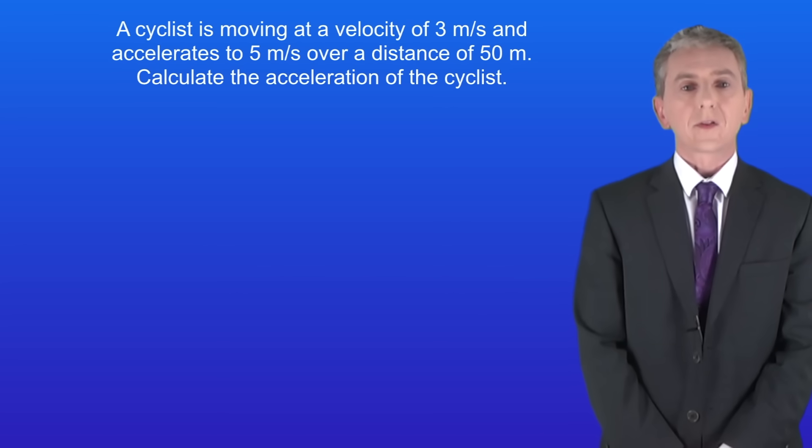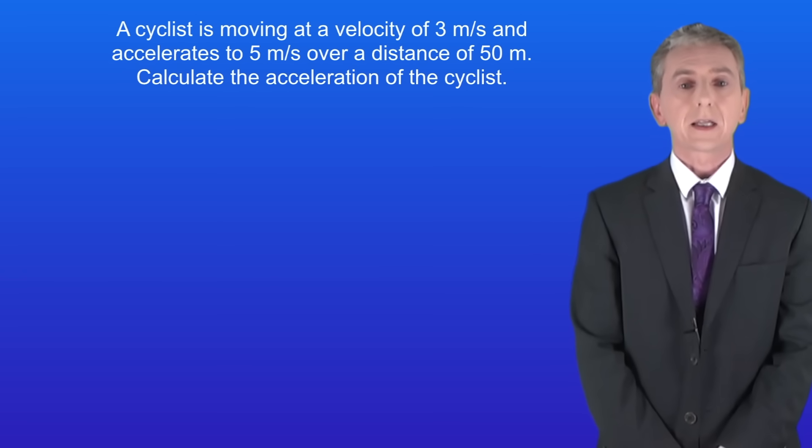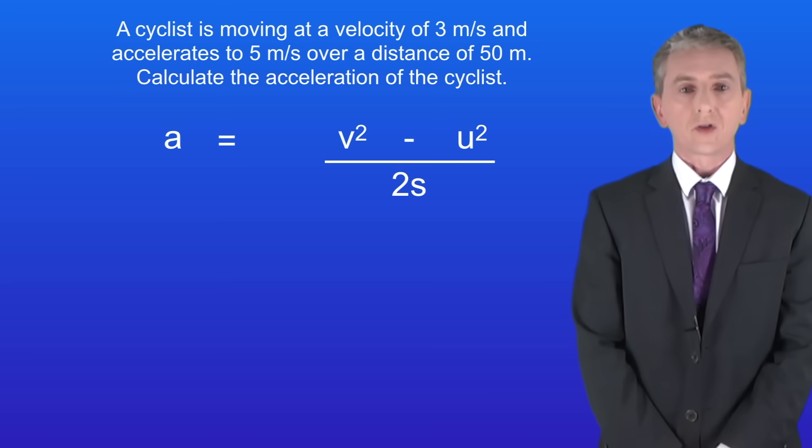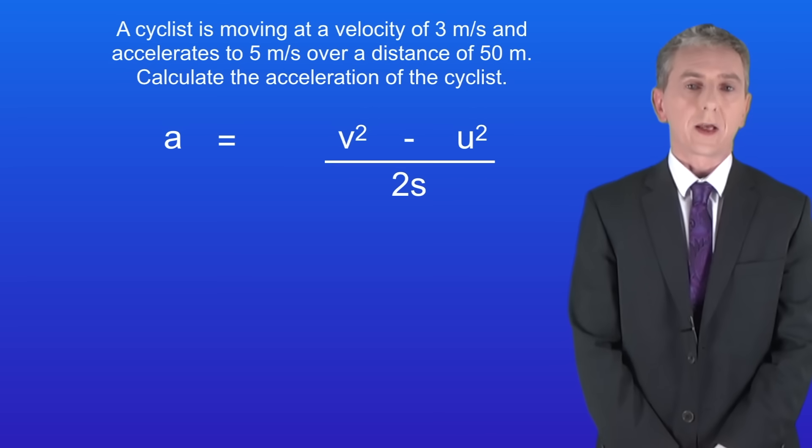Here's a question for you to try. A cyclist is moving at a velocity of 3 metres per second and accelerates to 5 metres per second over a distance of 50 metres. Calculate the acceleration of the cyclist. Now for this question I've rearranged the equation for you so pause the video now and try this yourself.